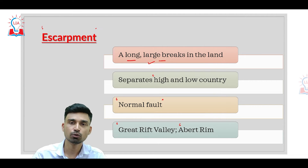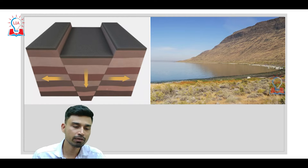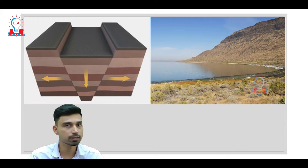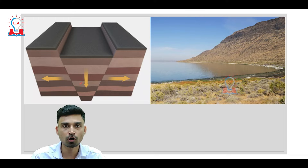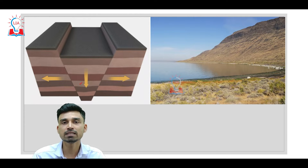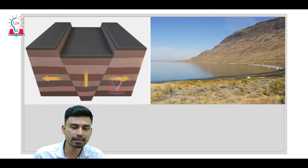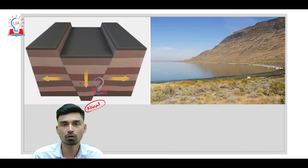Let us understand this with a diagram. Escarpment develops in areas where we have a normal fault. A fault can be defined as a crack or break in the rock. A normal fault is where the displacement of the earth's part or lithospheric region happens in the downward direction. Because gravitational force pulls everything downward, this movement is considered normal, and that is why it is called a normal fault.